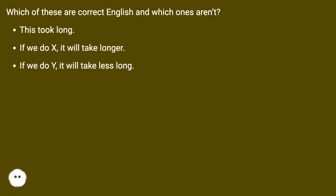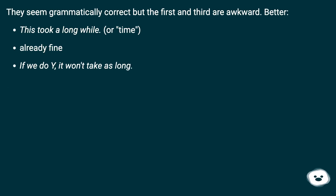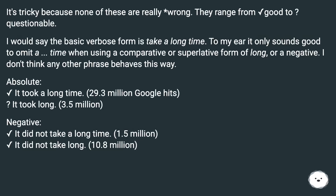Take long, longer, less long — which of these are correct English and which ones aren't? 'This took long,' 'if we do X it will take longer,' 'if we do Y it will take less long' — they seem grammatically correct, but the first and third are awkward. Better alternatives are 'this took a long while' or 'if we do Y it won't take as long.' It's tricky because none of these are really asterisk-wrong; they range from good to questionable.